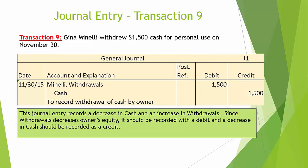Transaction number 9: Gina Minnelli withdrew $1,500 cash for personal use on November 30. This journal entry records a decrease in cash and an increase in withdrawals. Since withdrawals decrease owner's equity, it should be recorded with a debit, and the decrease in cash should be recorded as a credit.